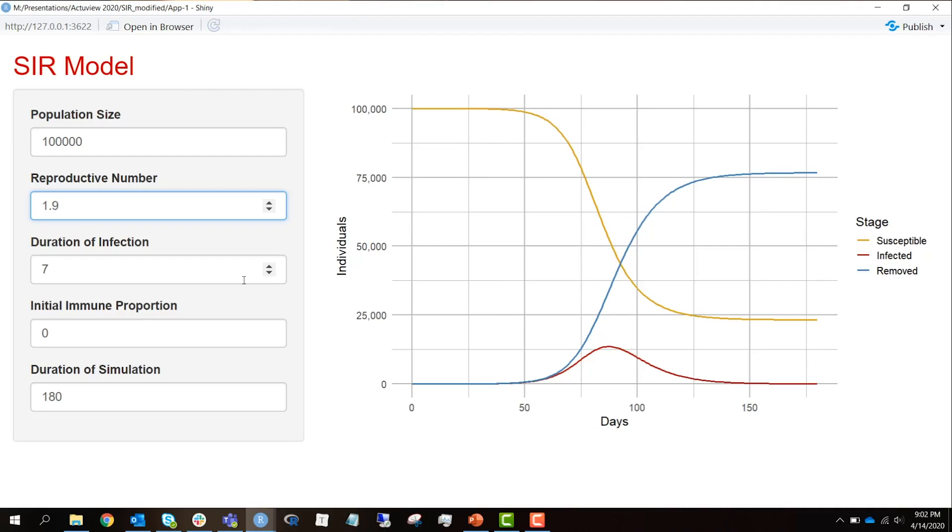Now, what happens if we change the duration of the infection? If it's a shorter duration, the infection goes much more quickly. Notice we're not changing where this equilibrium happens. The infection just burns itself out much more quickly. And if it's a longer infection, the epidemic can last a little bit longer. All right, so let's drop these back down to seven.